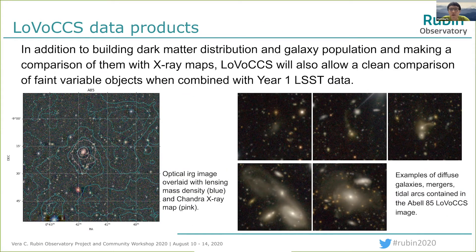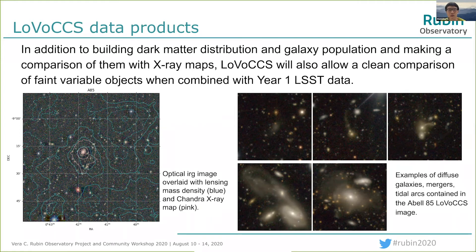The figure on the left shows the optical image of Abell 85 overlaid with the lensing mass distribution and the Chandra X-ray map. At the bottom right, we show deep images of diffuse galaxies, mergers, and tidal arcs from LoVoCCS. LoVoCCS will also allow a clean comparison of faint variable objects when combined with LSST year one data. NOIRLab newsletter in June this year has reported this survey. We are building a website and plan to finish our first paper by the end of this year, discussing processing details and preliminary results. That's all, thank you.